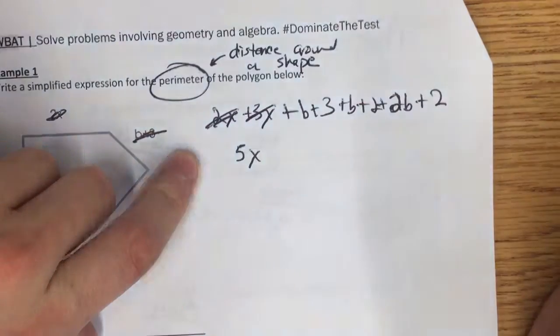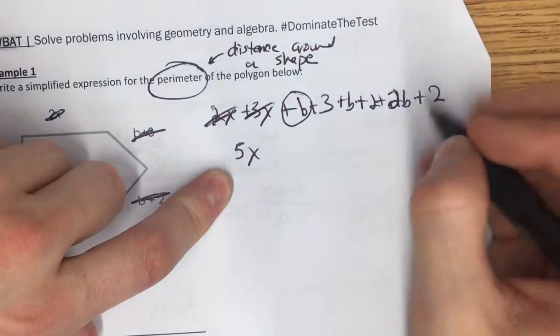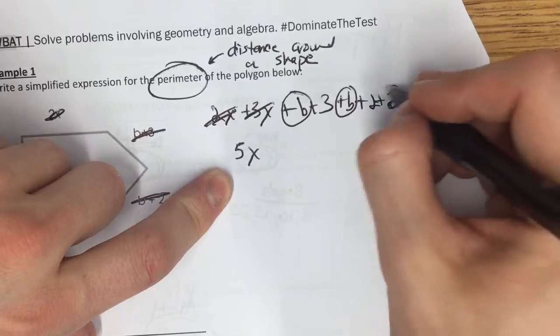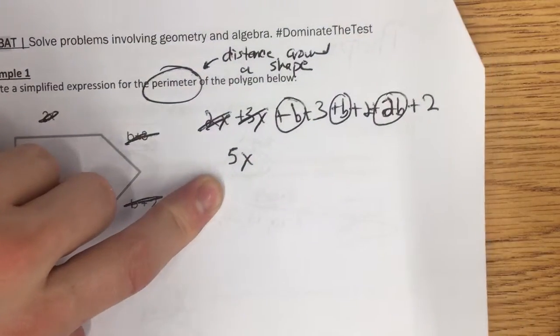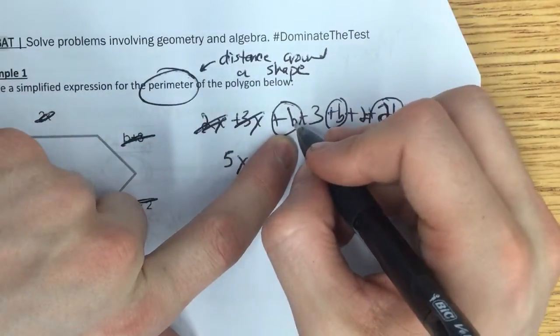I'm going to cross those out because I just used them. I'm going to see a plus b here, plus b, and plus 2b. Now we know the number in front of a variable, if it's not listed, that's got to be the number 1.